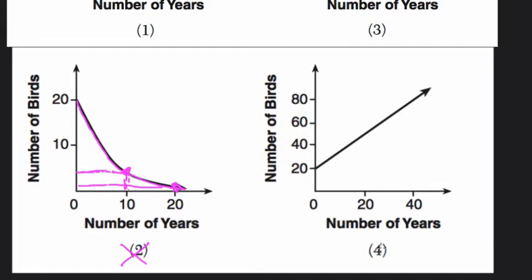And choice 4 I would also eliminate because this would be a constant rate of growth. For example, at 20 years, look at the height, we're about, I'd say, 50 birds. So that's an input of 20, there are 50 birds. But at 0, there were 20 birds. At the point, there's a point (0,20). So that is 20 years, and in 20 years it only increased by 30 birds.